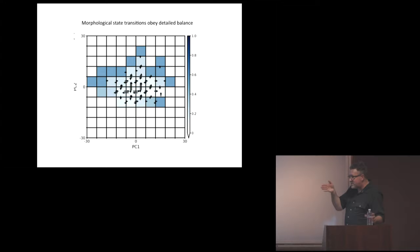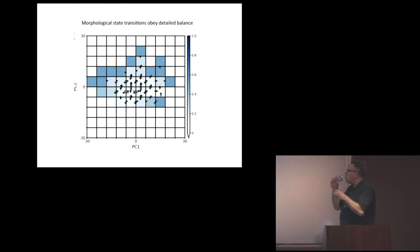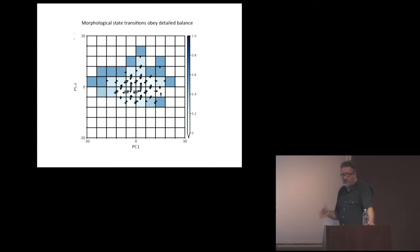Looking at the dynamics — if we know what state the cell is at a certain point in time, where is it going to be 10 or 20 minutes later — we find that detailed balance is actually obeyed. For any given pair of positions in state space, you see balanced transitions going both ways. So this starts to look like an equilibrium system, even though we know the cell is not at equilibrium. That got us thinking: to what extent can we push this analogy with thermodynamics?